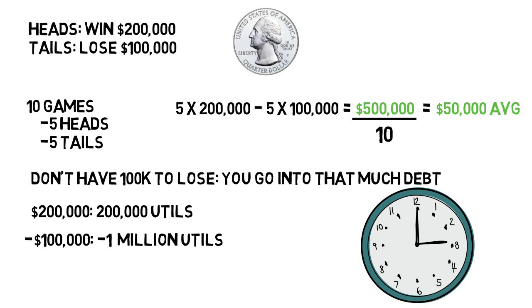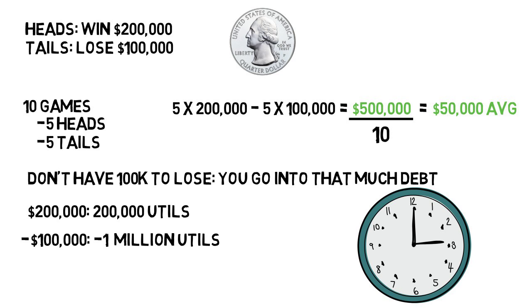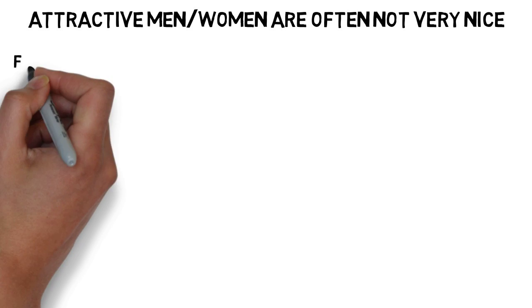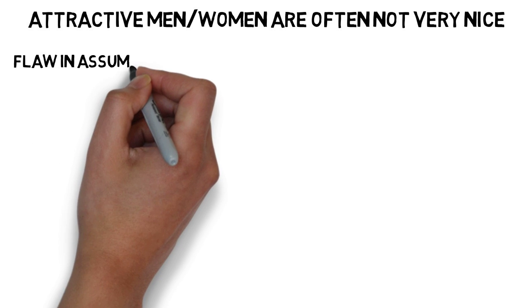Now these were just some examples from this book, but there are so many more. I'll do one more, which is more fun. We're going to look at the phrase: attractive men and women are often not very nice. I'm not going to debate whether this is true or not, but rather show a flaw in where this assumption often comes from.